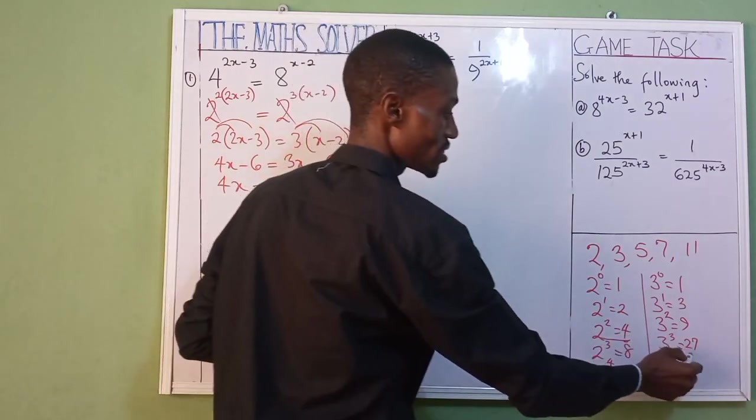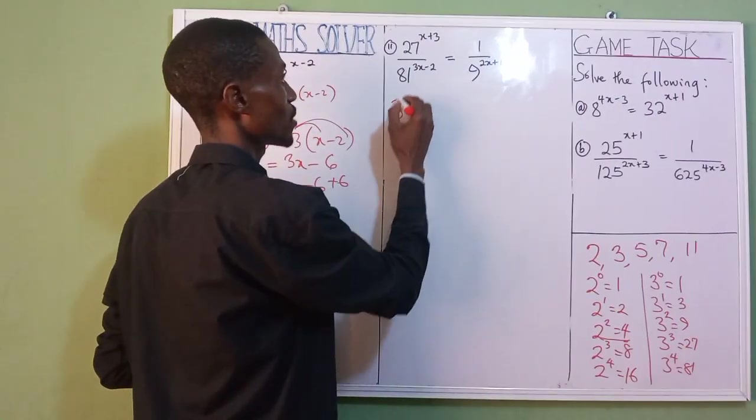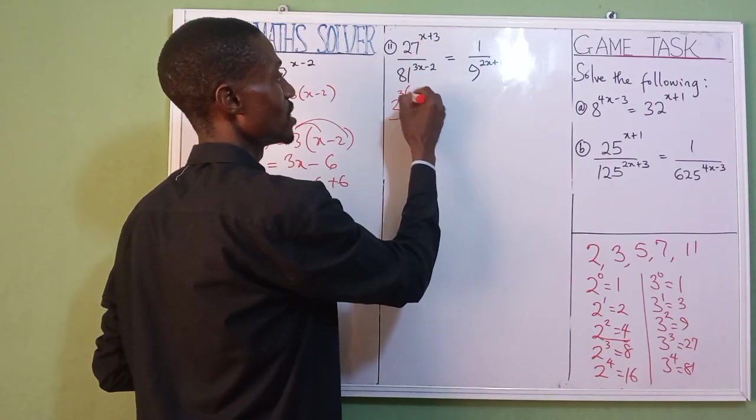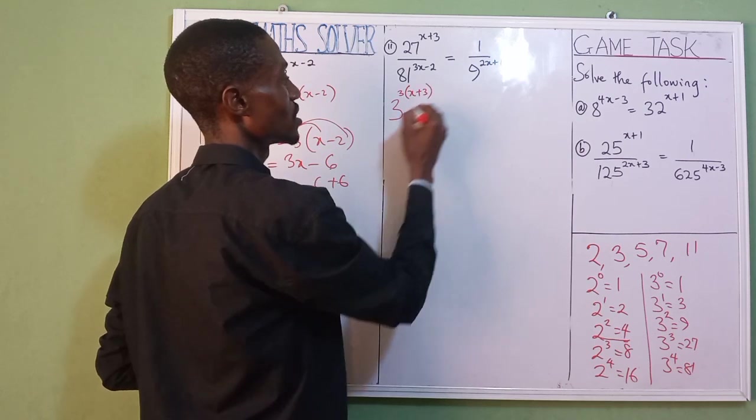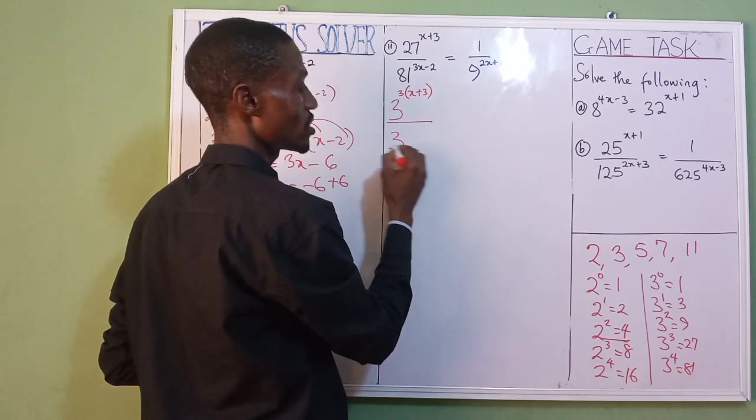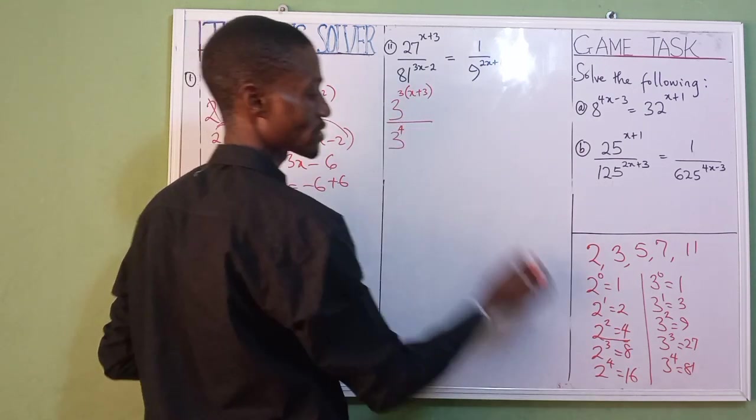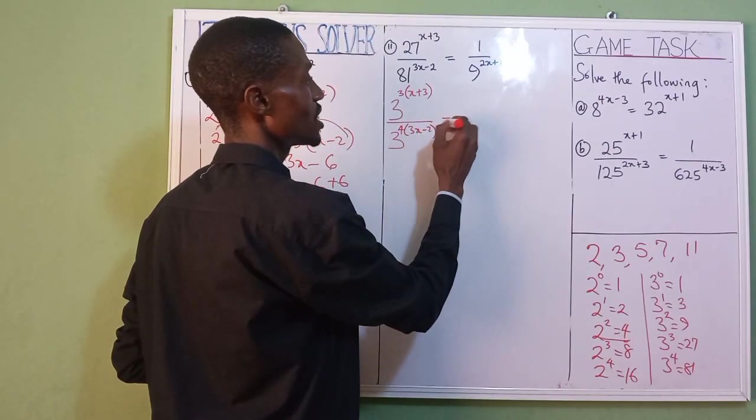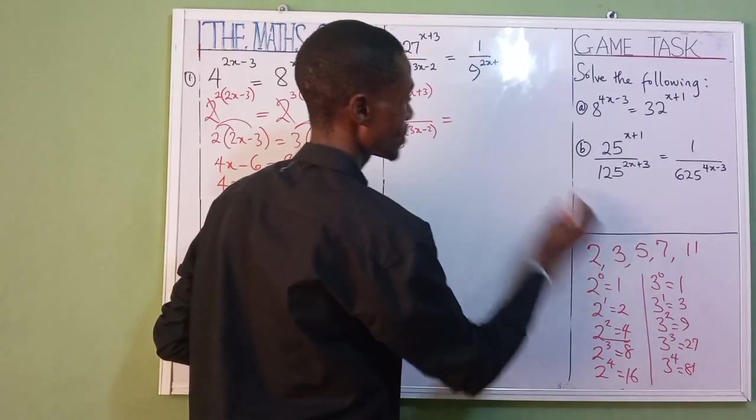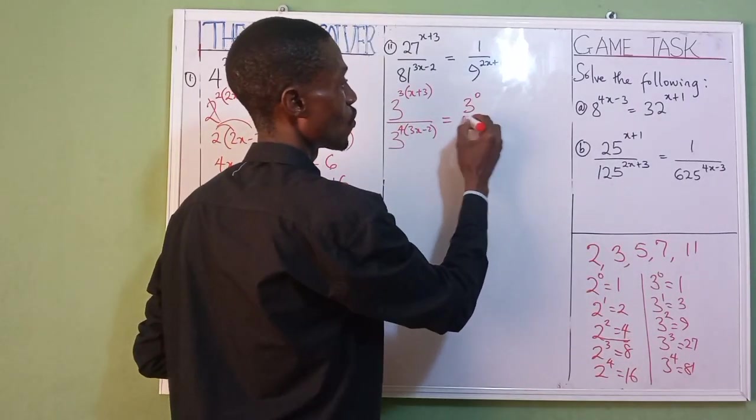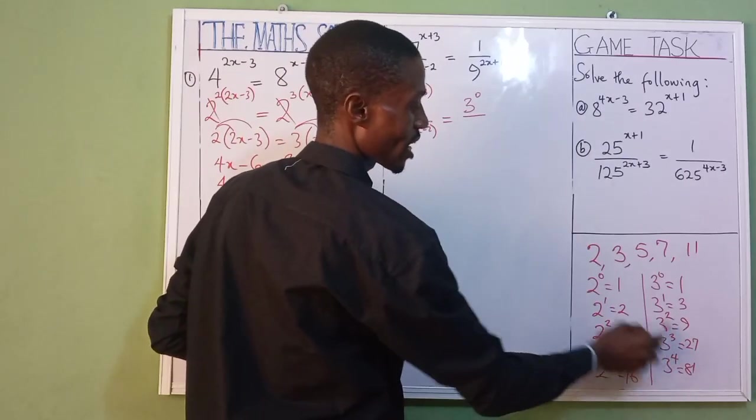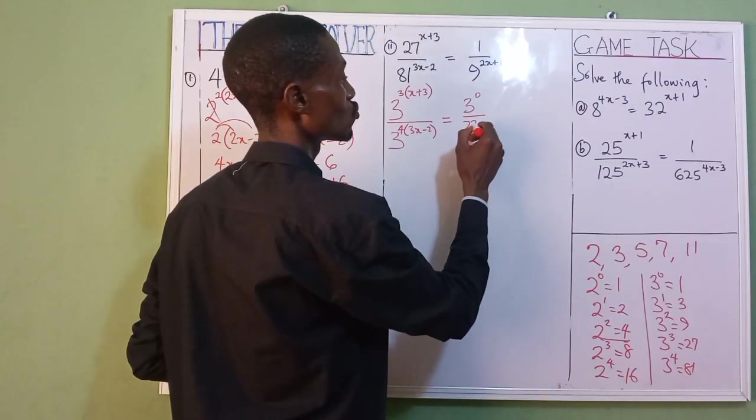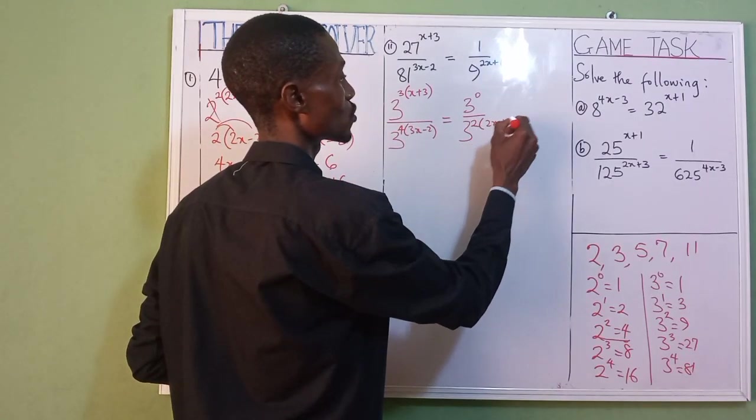So let's now come to what we have written. For 27, that's 3 to the power of 3. Just write 3 to the power of 3, that's for 27, into bracket (x plus 3), over, for 81, 3 to the power of 4, that's for our 81, into bracket (3x minus 2), equals 1. As you can see, 3 to the power of 0 over 9. Our 9 is 3 to the power of 2 into bracket (2x plus 1).